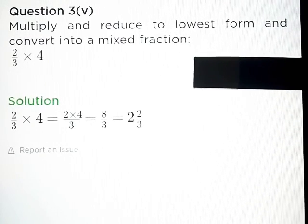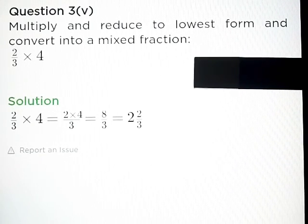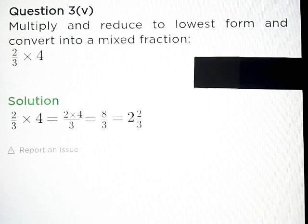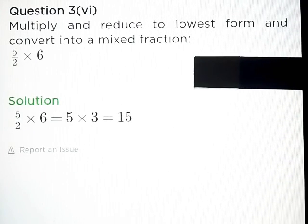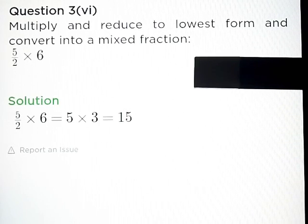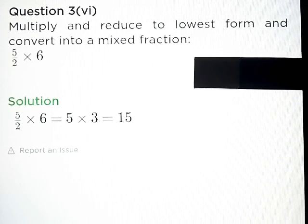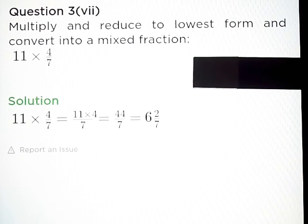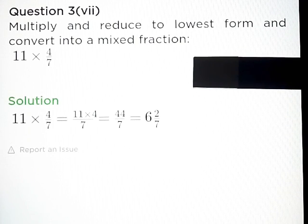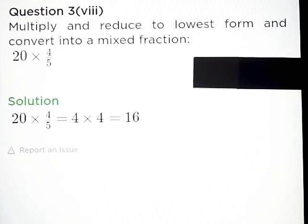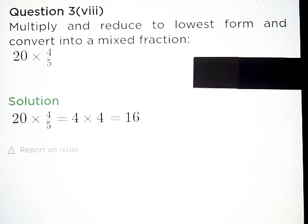Part E: 2 upon 3 into 4 — answer: 8 upon 3. Part F: 5 upon 2 into 6 is equal to 15. Part G: 11 into 4 upon 7 is equal to 44 upon 7, or 6 and 2 upon 7. Part H: 20 into 4 upon 5 is equal to 16.